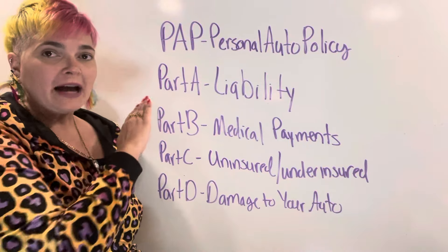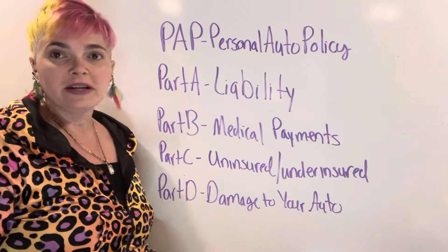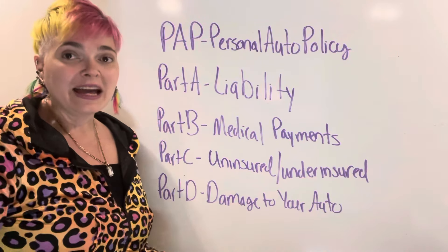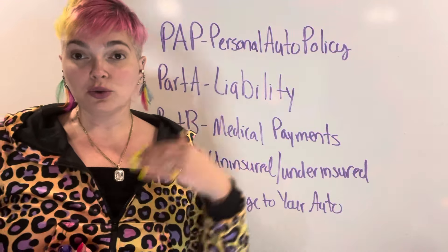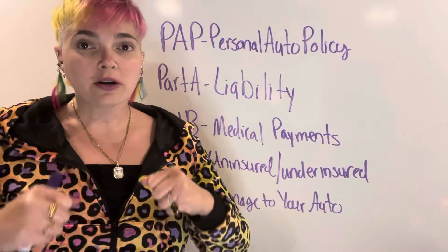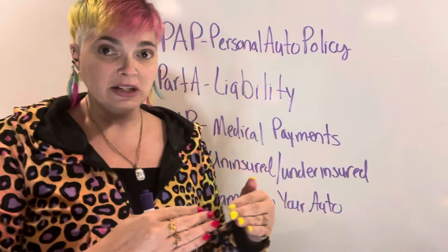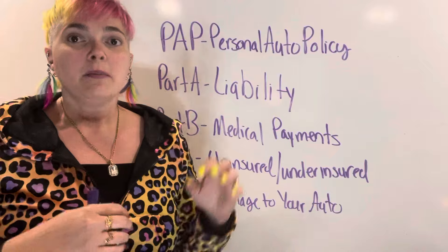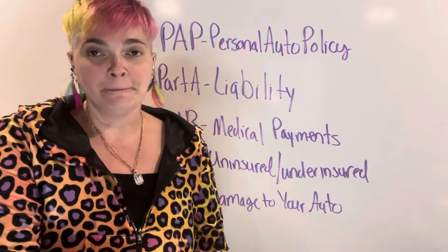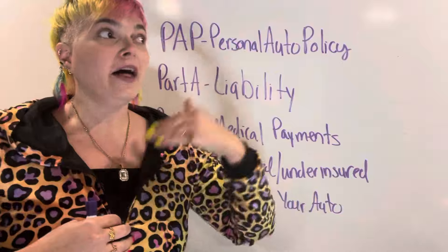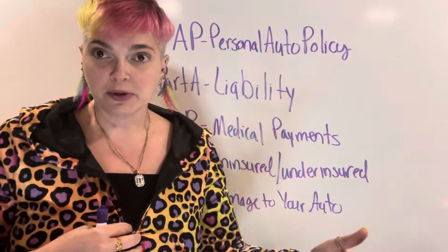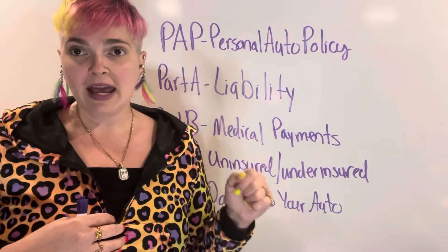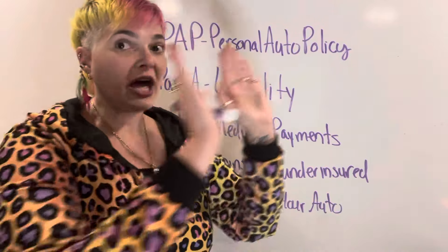There are actually parts A through F, but they rarely have ever tested on E or F, but we will talk about those. Part A is liability. This is the coverage that is going to protect the other person. So if you are driving your car and you crash into someone else and cause them injuries or damage, part A liability is what pays out to them — their medical bills and their property damage.